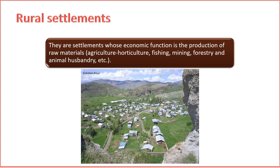3. Natural surroundings. Rural settlements are characterized by open spaces, greenery, and proximity to nature. Residents may have easy access to fields, forests, or other natural resources. 4. Community cohesion. Due to the smaller size of rural settlements, there is often a strong sense of community. Residents may have close social ties, and community activities may play a significant role in daily life. 5. Limited infrastructure. Rural areas may have limited infrastructure compared to urban centers. Access to amenities such as healthcare, education, and commercial services may be more restricted. 6. Traditional architecture. Buildings in rural settlements often reflect traditional architectural styles, and construction materials may be sourced locally.